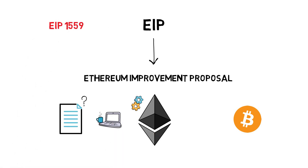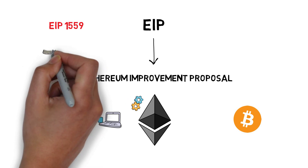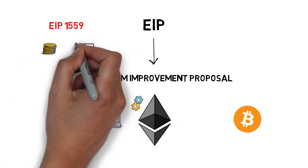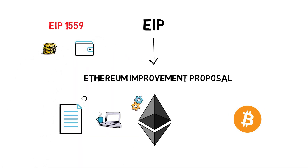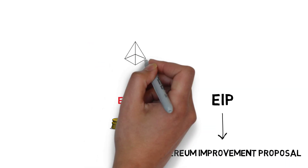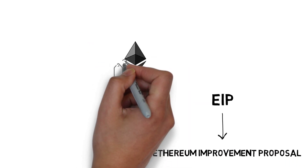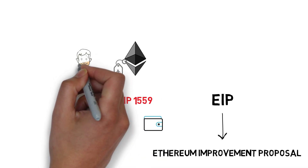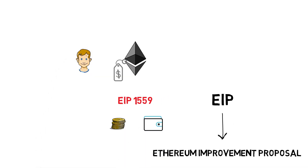EIP-1559 is one of the exceptions. This is because the proposal has some big implications when it comes to the ETH monetary policy and client applications such as wallets. EIP-1559 describes changes to the Ethereum fee model and it was put forward by Vitalik Buterin in 2019.